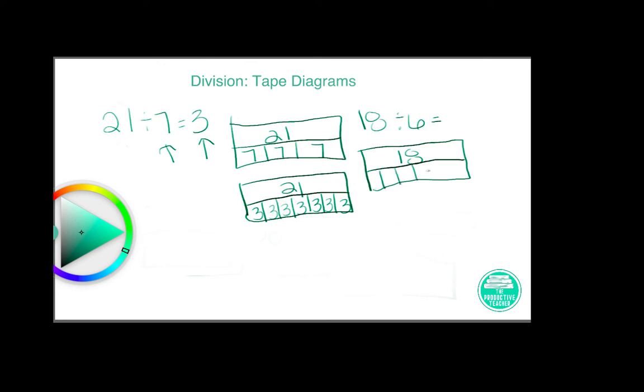And then I'm going to put dots until I get to 18. So 3, 4, 5, 6, 7, 8, 9, 10, 11, 12, 13, 14, 15, 16, 17, 18.